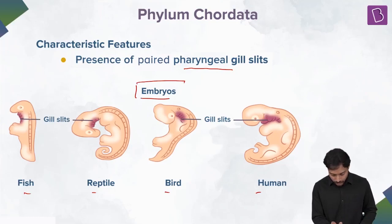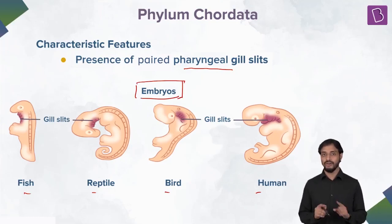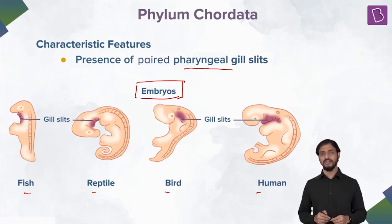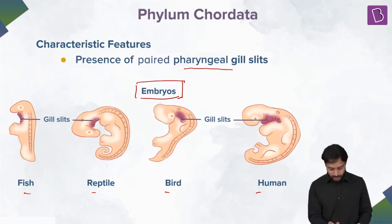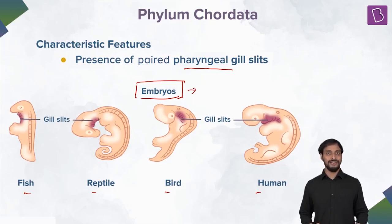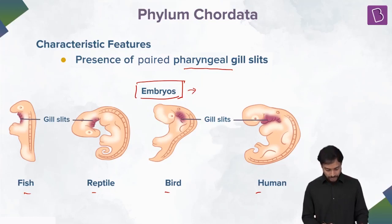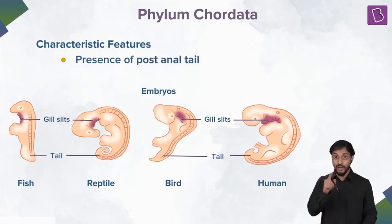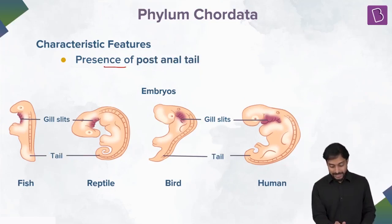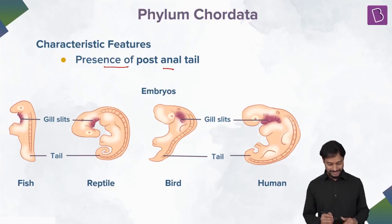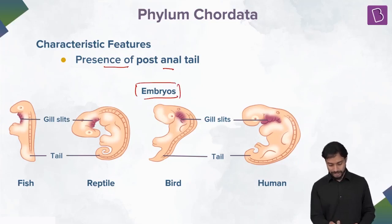I'm talking about the embryonic stage, not adults. Fishes have gills, but we don't — however, when we were embryos, we had gill slits. So presence of pharyngeal gill slits is one of the characteristic features of chordates. This is also interesting: presence of the post-anal tail. Again, I'm talking about the embryonic stage.